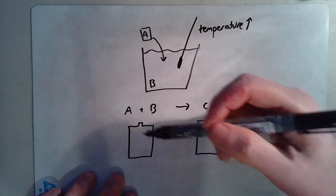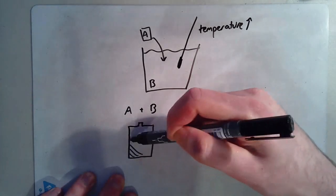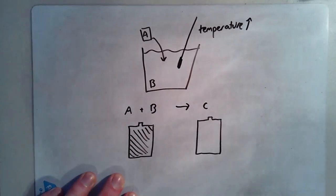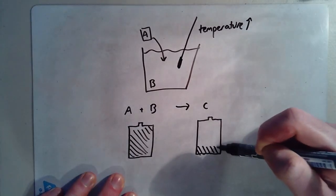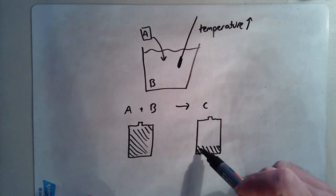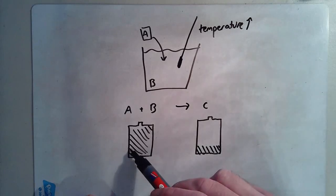The thing is though, A and B store an absolute ton of energy. But C only stores a little bit of energy, in this particular case. So the thing is, I know where this energy has come from. It's come from A and B. It's this amount of energy over here.